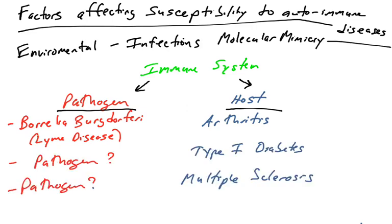There are other autoimmune disorders possibly linked to pathogens, though causation hasn't been established — only correlation. Some scientists hypothesize that type 1 diabetes could be due to molecular mimicry: an early-life infection causes the immune system to attack the pathogen, and that attack also targets the beta cells of the pancreas, destroying them. Another example is multiple sclerosis, which involves destruction of cells responsible for creating the myelin sheath around neuronal axons. There is a possible link between infections and the immune system attacking the myelin-producing cells.